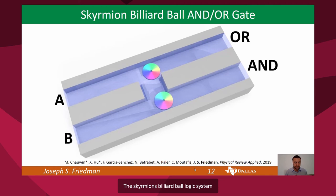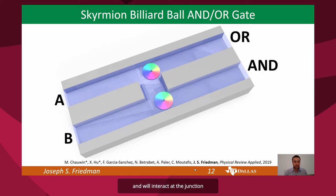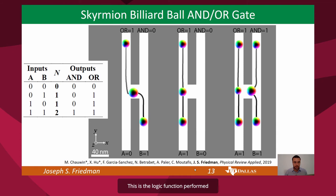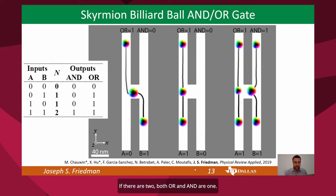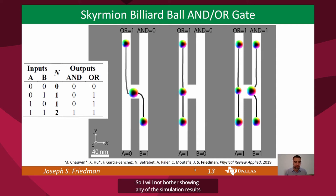The skyrmion billiard ball logic system is very much inspired by the microfluidic bubble structure, as seen in this AND-OR gate. Skyrmions entering the A or B terminals will be pushed by the spin Hall effect towards the OR and AND terminals, and will interact at the junction in the middle where the skyrmion tracks are opened. The presence or absence of the skyrmion represents a 1 or 0, respectively. The truth table shows that the number N of skyrmions is always conserved — there is always an equal number of input and output skyrmions. If there is one skyrmion, the OR output is 1 and AND is 0. If there are two, both OR and AND are 1.